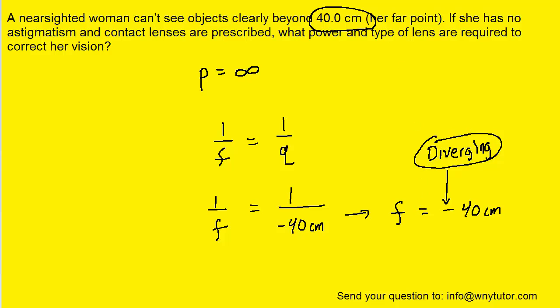And then for the other part of the question, to calculate the power, all we have to do is take one and divide it by the focal length. Just remember that when you do that, you have to use the unit of meters for the focal length.